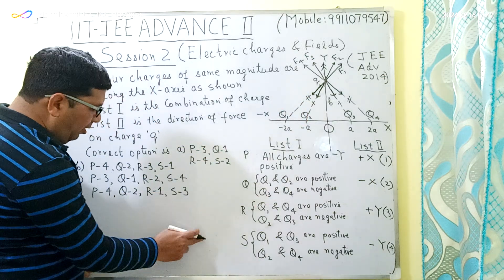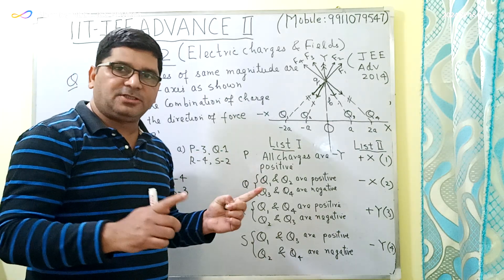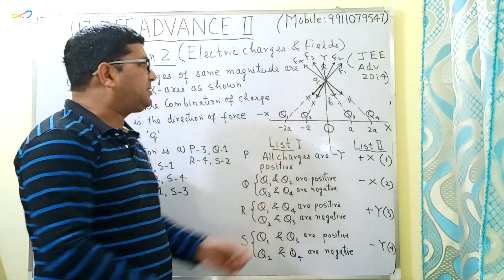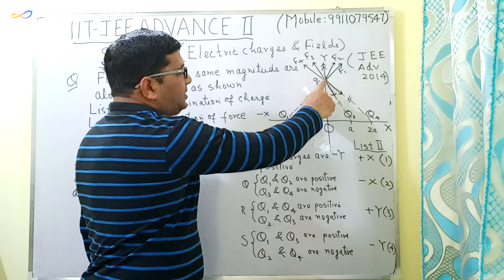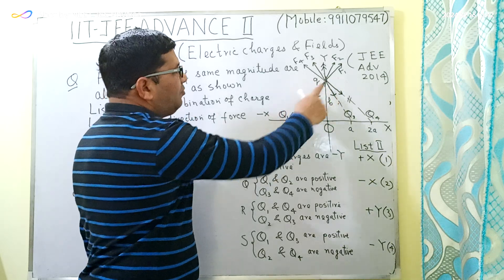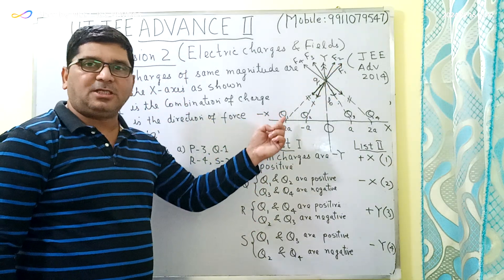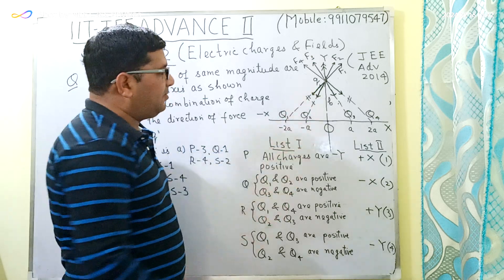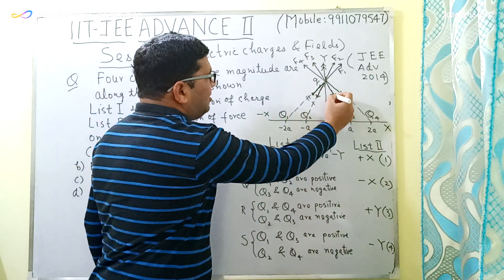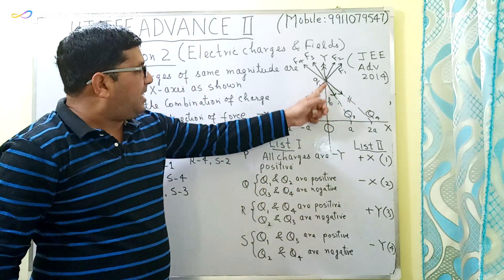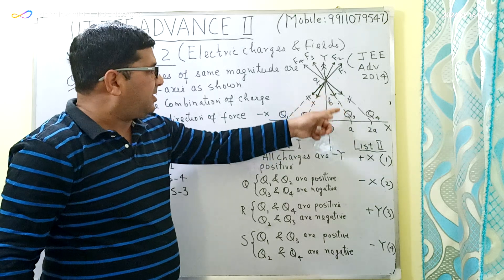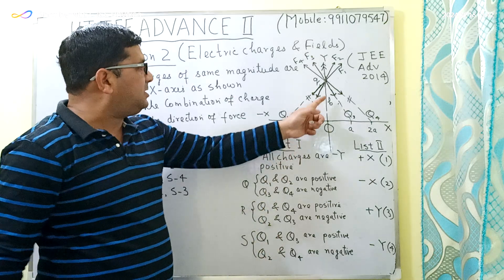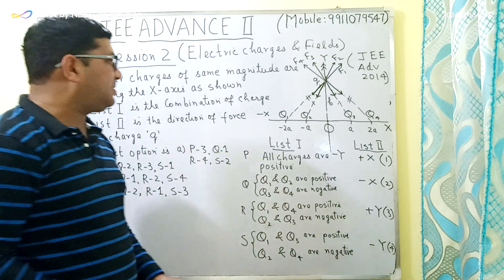The first important thing to remember is that the electrostatic force between like charges is repulsive. If these two charges are both positive or both negative, the electrostatic force will be repulsive. If the charges are unlike — one positive and one negative — then the electrostatic force will be attractive. I have drawn arrows here to explain the direction of forces in the case of like and unlike charges.